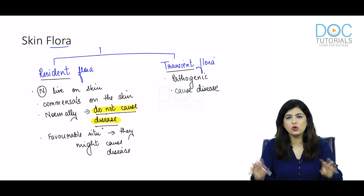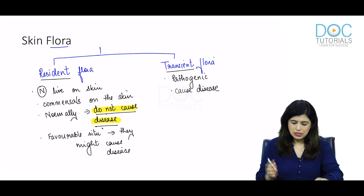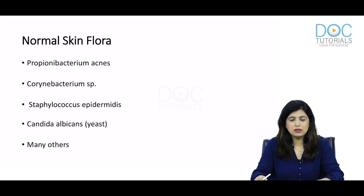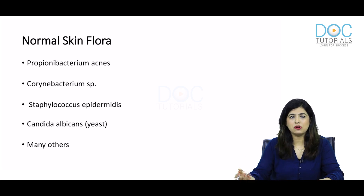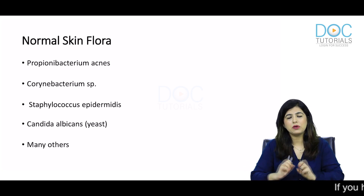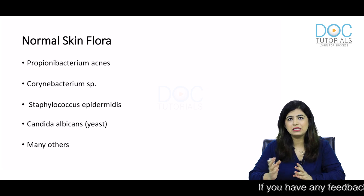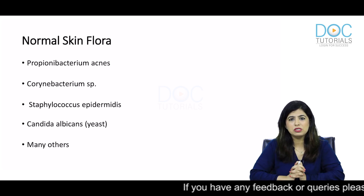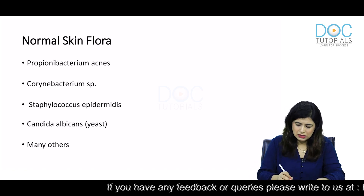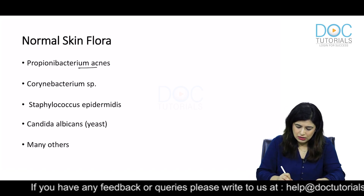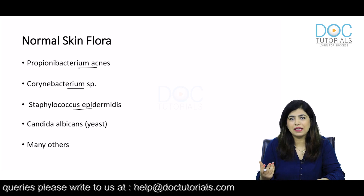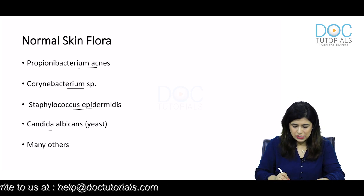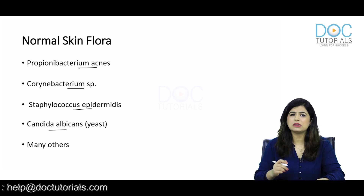These are the two different groups of bacteria present on the skin. Talking about some normal resident skin flora, these are examples of bacteria present on our skin as commensals. They also perform a protective function — they protect our skin from pathogenic bacteria and fungi and allow us to maintain normal homeostasis. These are Propionibacterium acnes, Corynebacteria, Staphylococcus epidermidis (the coagulase-negative staphylococci), yeast like Candida albicans, and numerous others.